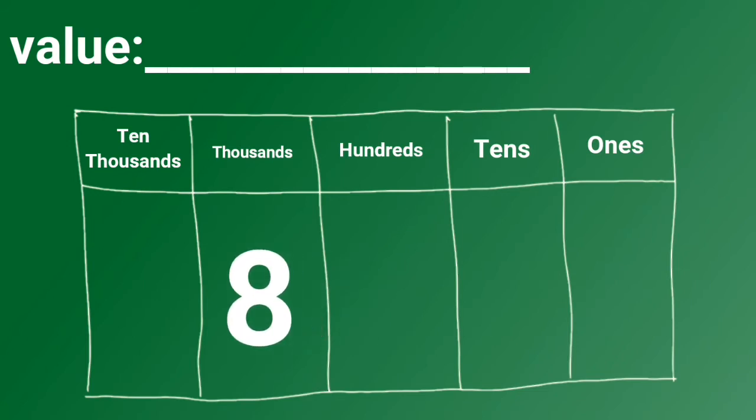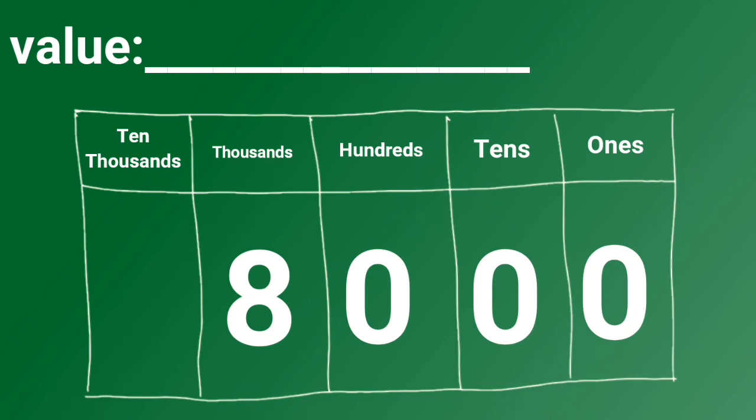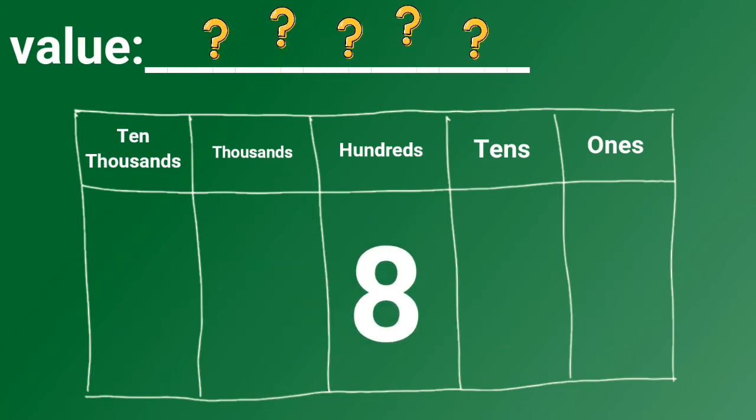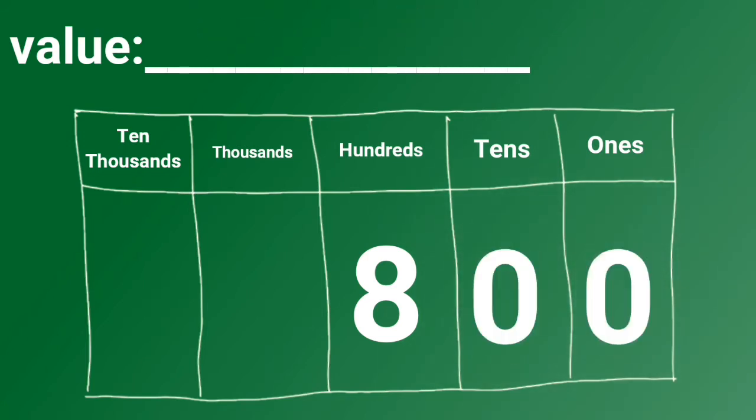8 in the thousands place means 8,000 in value. 8 in the hundreds place is 800. Did you get it? How about this?